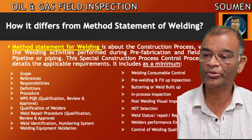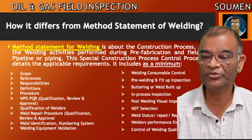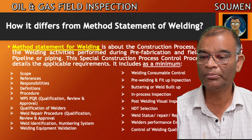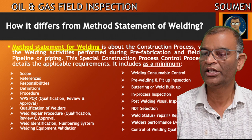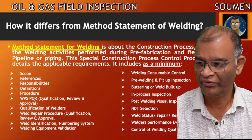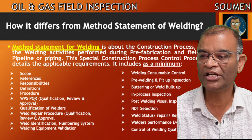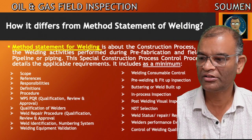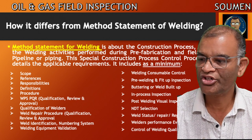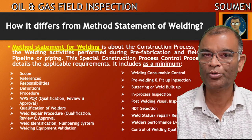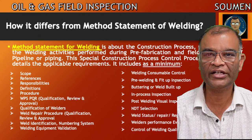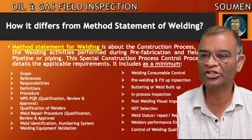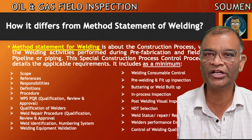The method statement also covers: qualification of welders; welding repair procedure qualification review and approval; welding identification and numbering system; welding equipment validation; welding consumable control; pre-welding and fit-up inspection; buttering and weld built-up; in-process inspection; post-welding; visual inspection; entity selection; weld status; repair and reporting process; welders' performance evaluation; and control of welding quality. All these are the basic structure of a welding control procedure or welding method statement.